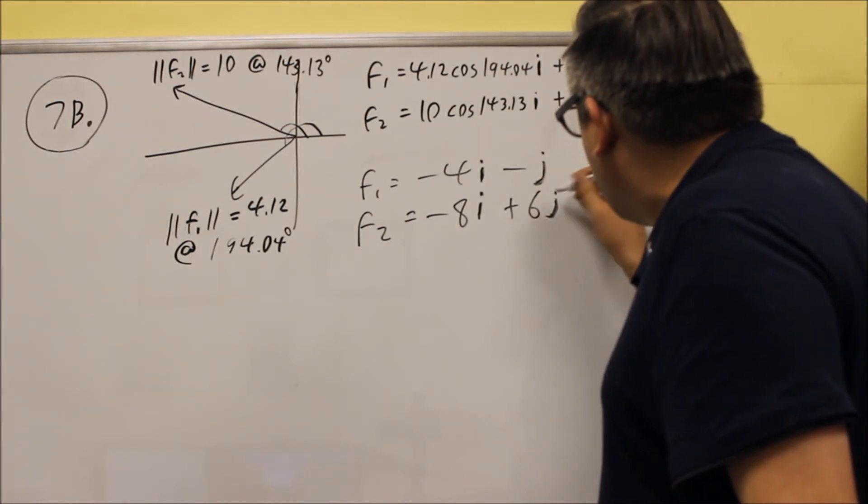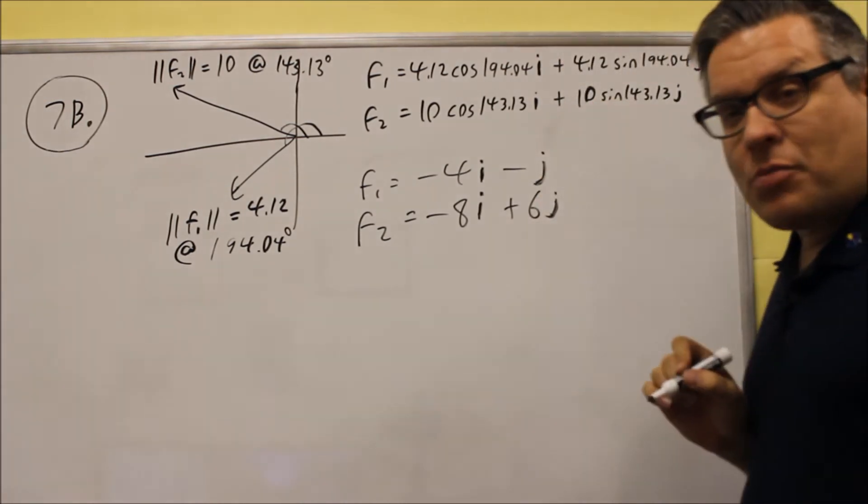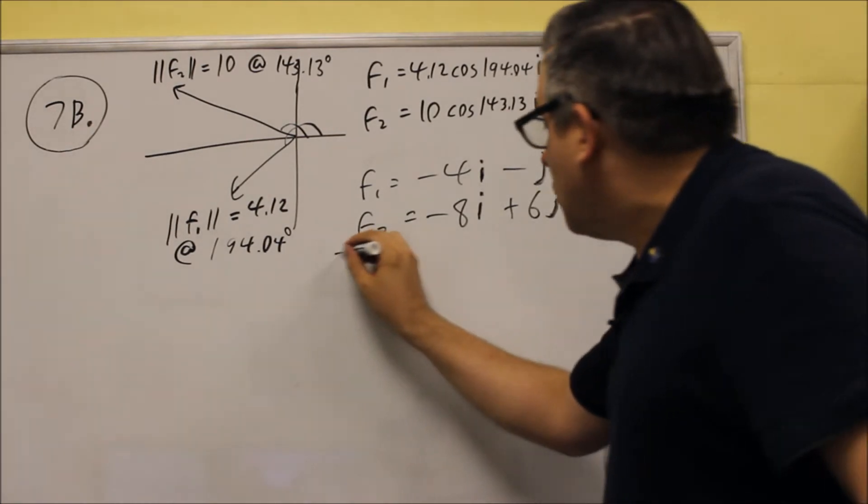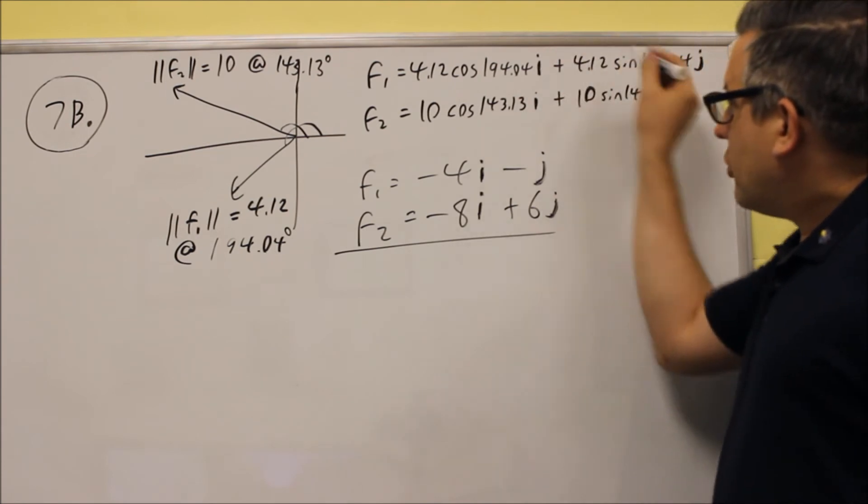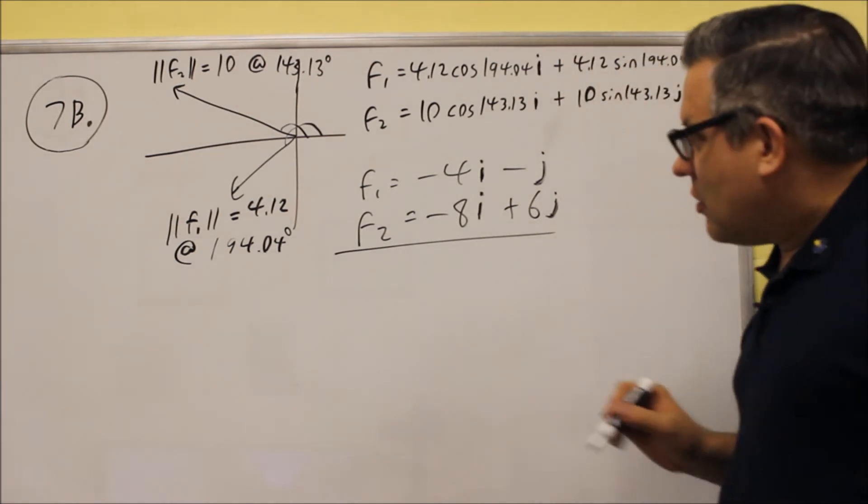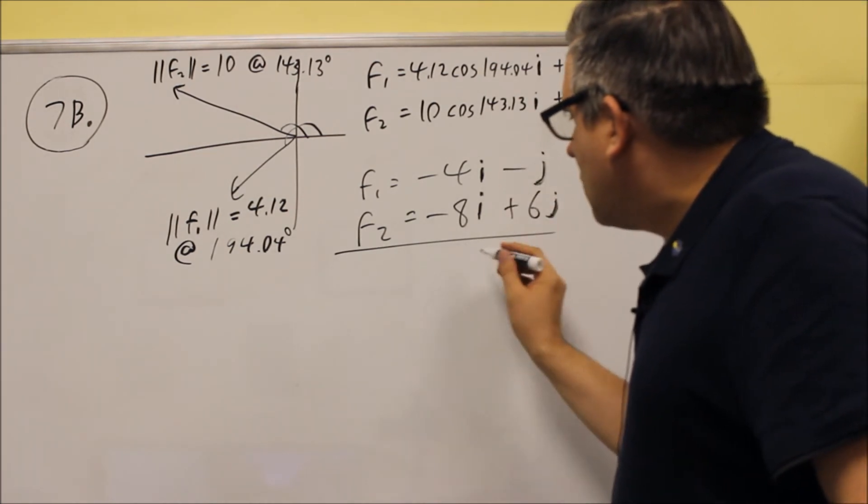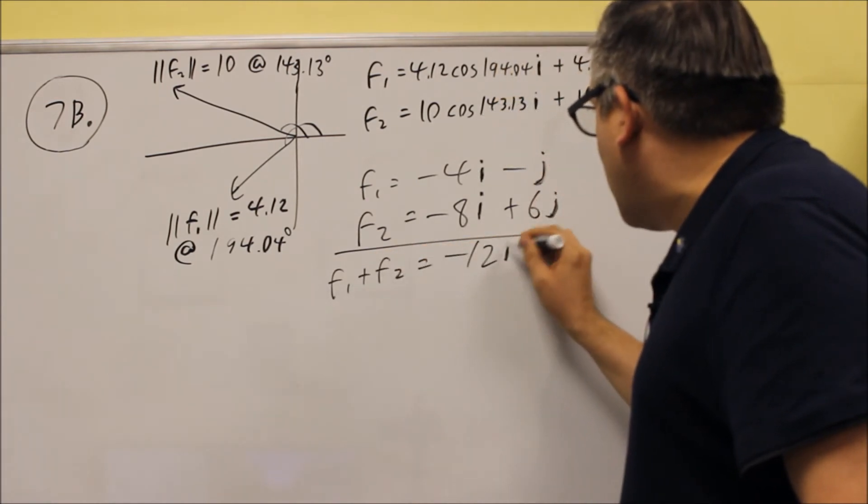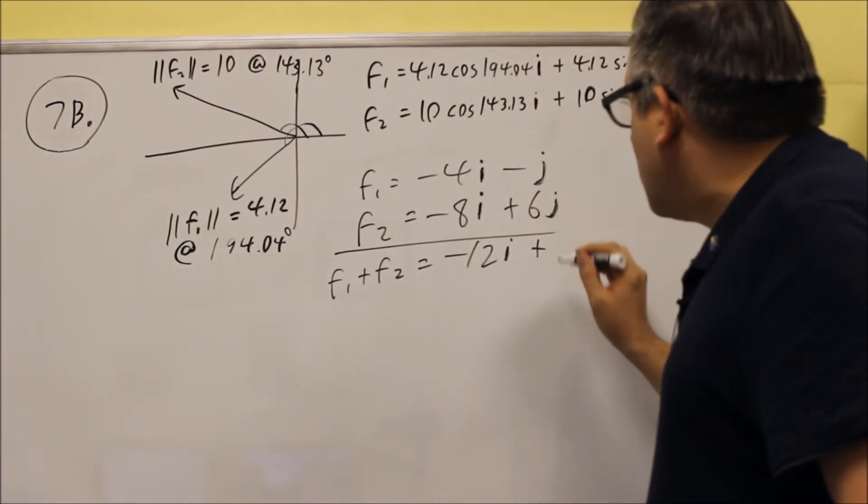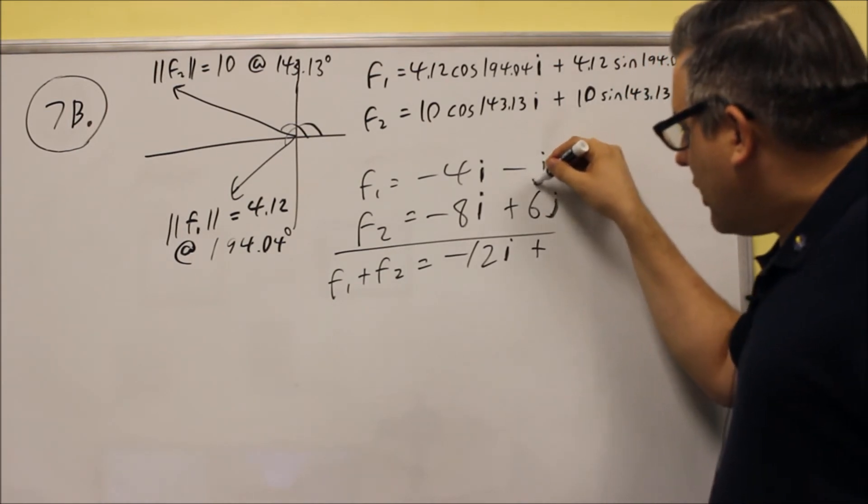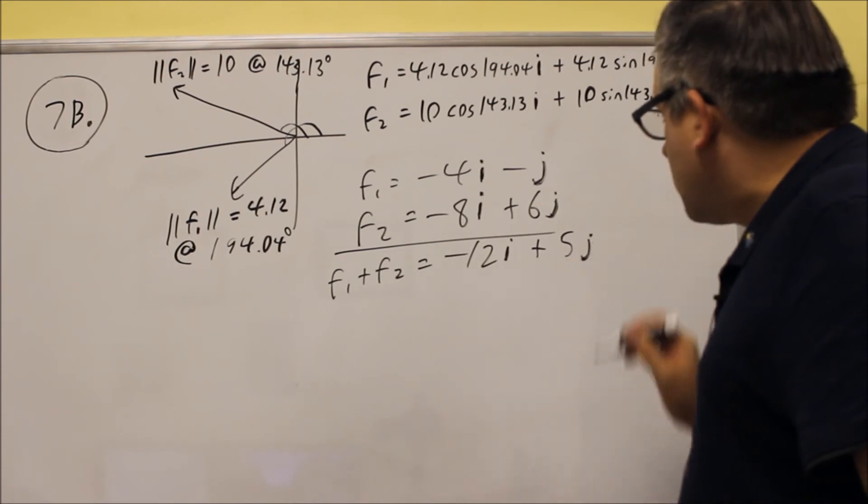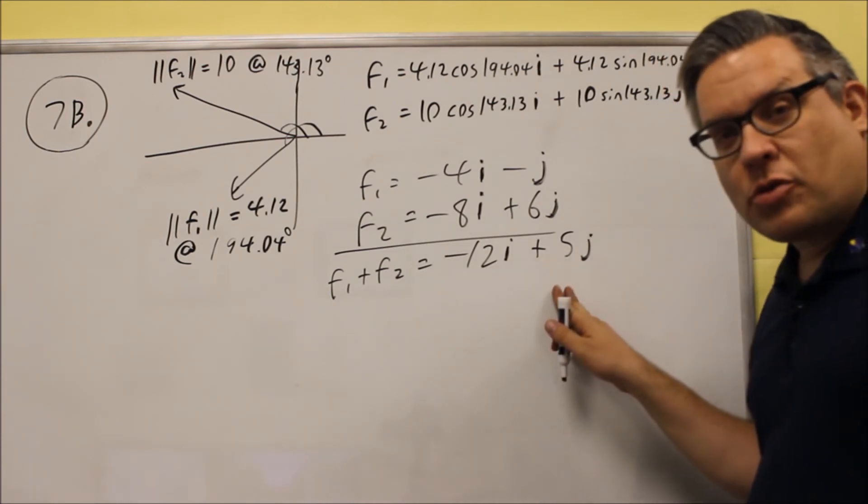So again, because of the way the numbers are set up here, that's why we're getting these exact values that come up here when we put that in the calculator. So when we add this together, F1 plus F2, you get negative 12i plus, this is going to be negative 1 plus 6 is 5j. So we actually get whole numbers for this one.